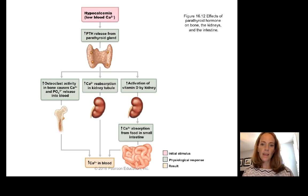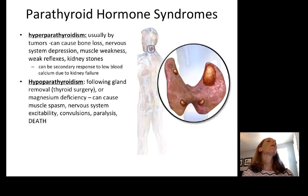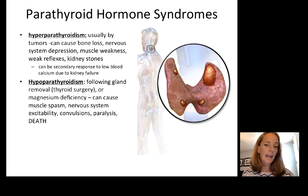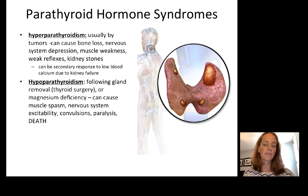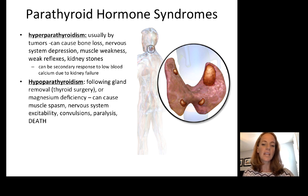There is a similar diagram in your textbook showing the bone and kidney role in calcium homeostasis as directed by parathyroid hormone. Hyperparathyroidism — too much parathyroid — can be caused by tumors and leads to increased bone loss from excess osteoclast activity, nervous system depression, muscle weakness, weak reflexes, and calcium deposits in the kidneys causing kidney stones. It can be a secondary response to low blood calcium due to kidney failure. Hypoparathyroidism — too low — can cause muscle spasms, nervous system hyperexcitability, convulsions, paralysis, and in extreme cases can be deadly.